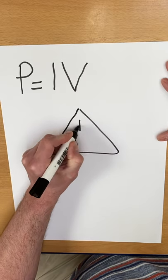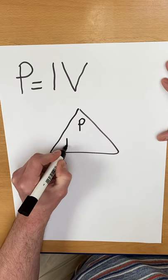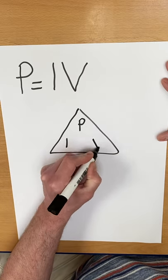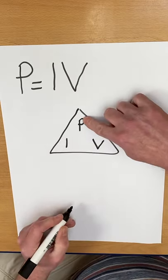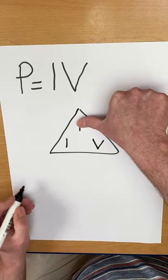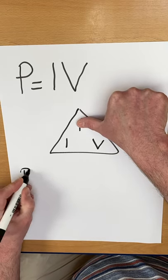Use our triangle: P for power, I for current, V for voltage. To find power, cover it over — power equals current multiplied by voltage.